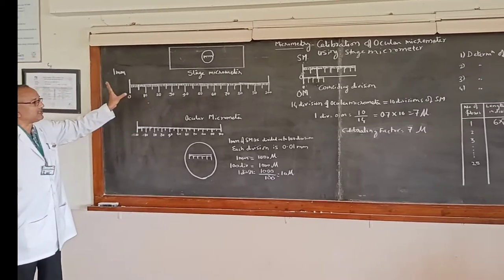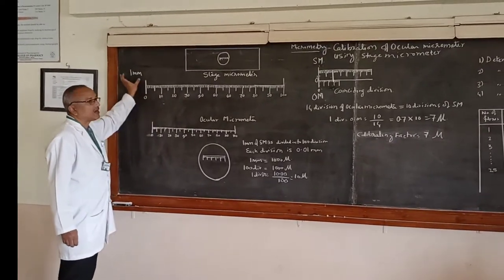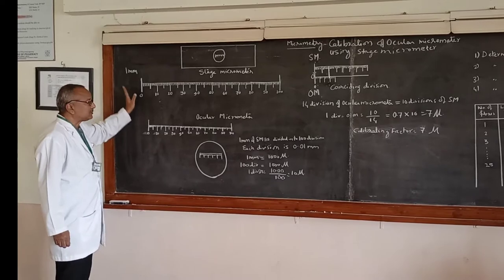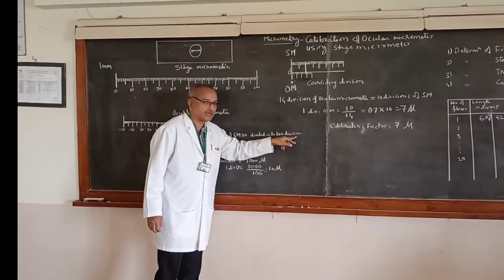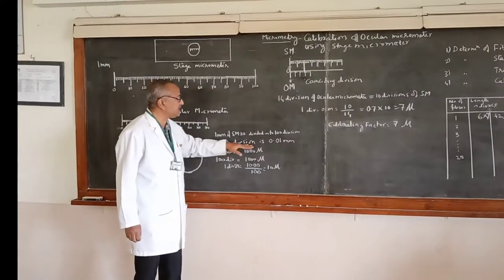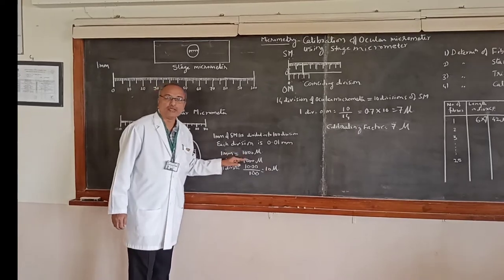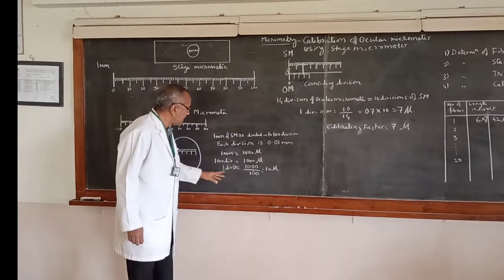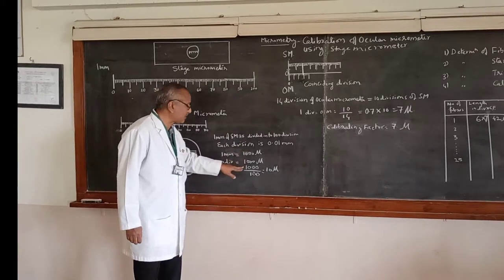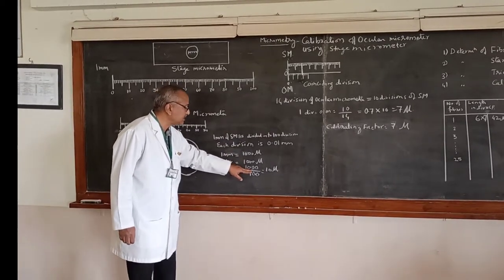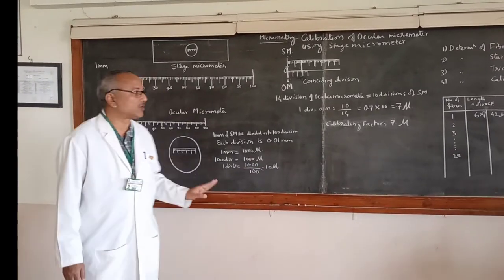The stage micrometer is divided into 100 divisions, and each division is 0.01 mm. Since 1 mm equals 1000 microns, 100 divisions of the stage micrometer equals 1000 microns, meaning 1 division equals 10 microns. This is the calculation basis we are using.